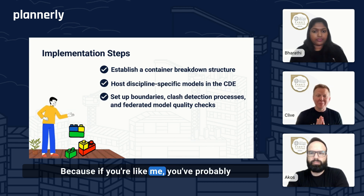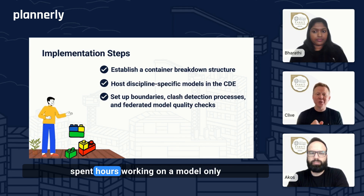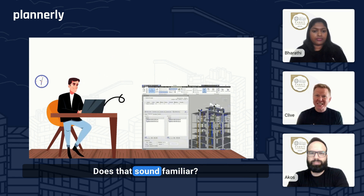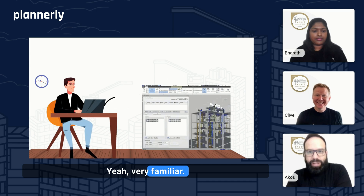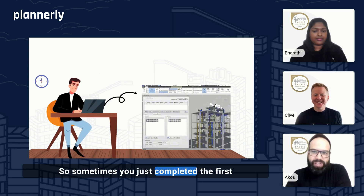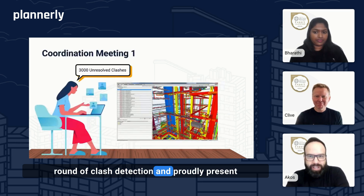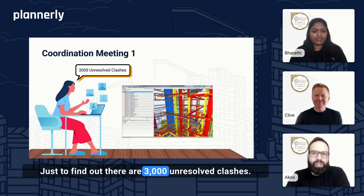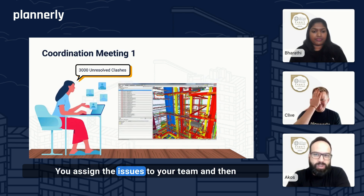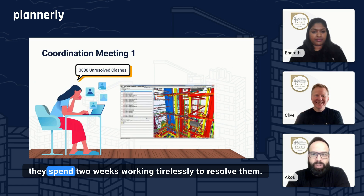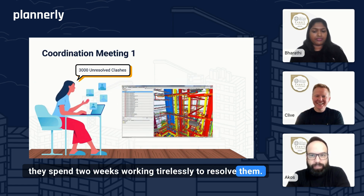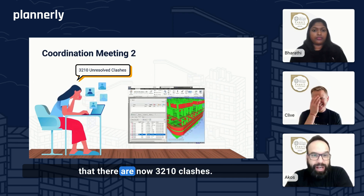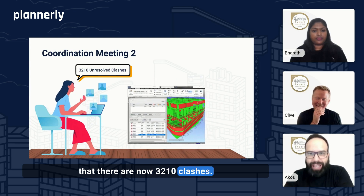If you've spent hours working on a model only to feel frustrated during coordination meetings — does that sound familiar? Sometimes you complete the first round of clash detection and proudly present the results to the team, just to find out there are 3,000 unresolved clashes. You assign the issues to your team, and they spend two weeks working tirelessly to resolve them. Then comes the second coordination meeting, but instead of progress, you discover there are now 3,210 clashes.